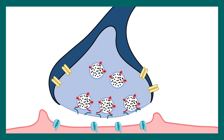Now we'll look at this phenomenon in a bit more detail, breaking it down into presynaptic and postsynaptic events to understand the nuts and bolts of it. The nerve terminal is shown in this diagram, and you can see the action potential is reaching the nerve terminal.